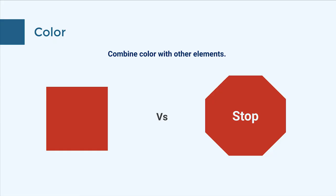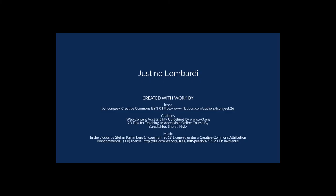The last thing I'd like to talk about in this video is the use of color to convey meaning. It's okay to use color to convey meaning, but you want to combine it with other elements so it's not the only mode of meaning conveyance. Not everyone can perceive color. A stop sign is a great example — it has multiple modes of meaning conveyance: the shape of the sign, the word 'stop,' and the color red. So the color is working in combination with other elements. Thanks for watching and have a great day.